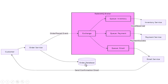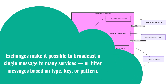A customer places an order. The order service saves it in the database and then sends a message — "order placed" — to a fanout exchange in RabbitMQ. That fanout exchange instantly routes the message to three queues: one for inventory, one for payment, and one for email. The inventory service receives the message and reserves stock, the payment service processes the charge, and the email service sends the confirmation email. They all saw the same event — "order placed" — but handled it independently. If the email service is down, that message just stays in its queue; the other services aren't affected. That's the reliability RabbitMQ and exchanges bring to your system.